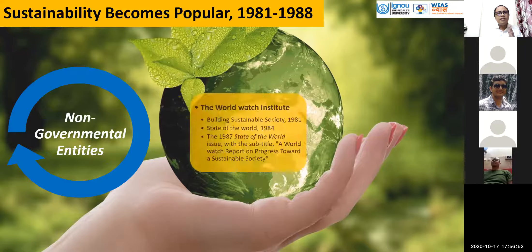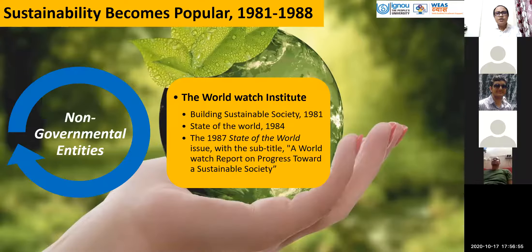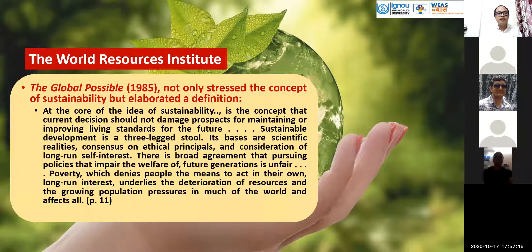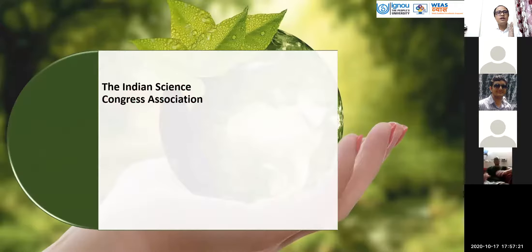Some non-governmental entities, like the World Watch Institute, published works using the words sustainability, such as 'Building a Sustainable Society' and 'State of the World' in 1984, with the subtitle 'A World Watch Report on Progress toward a Sustainable Society.' The World Resources Institute's 'Global Possible' 1985 report also used the concept of sustainability.